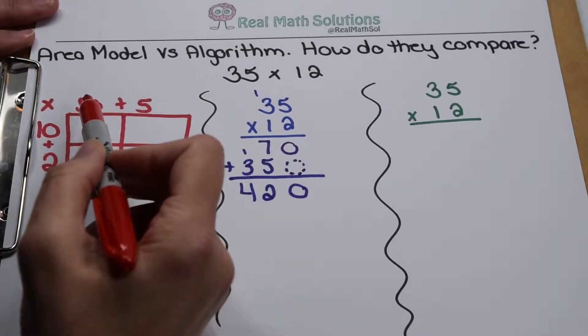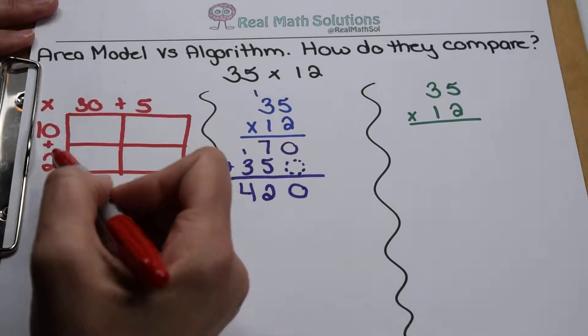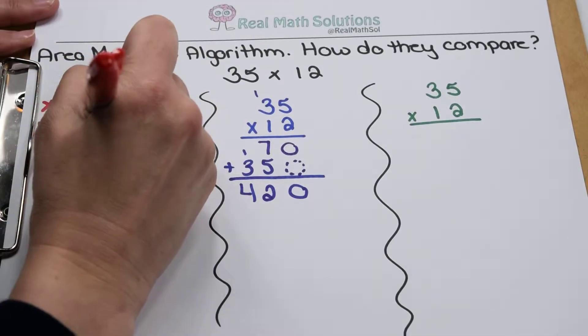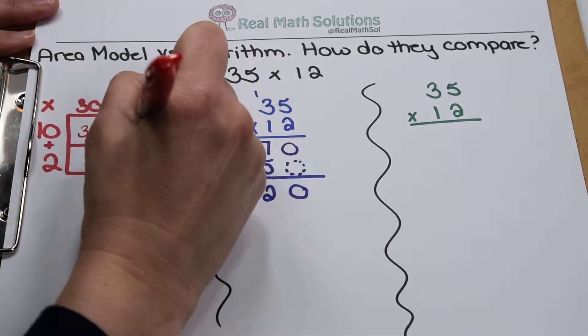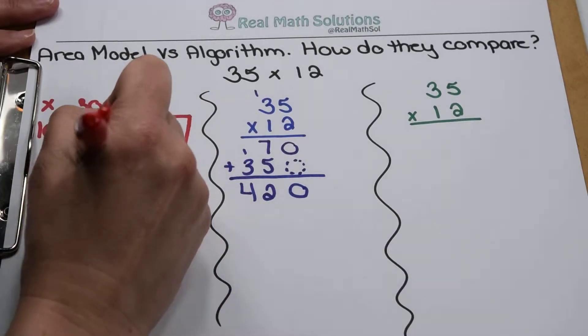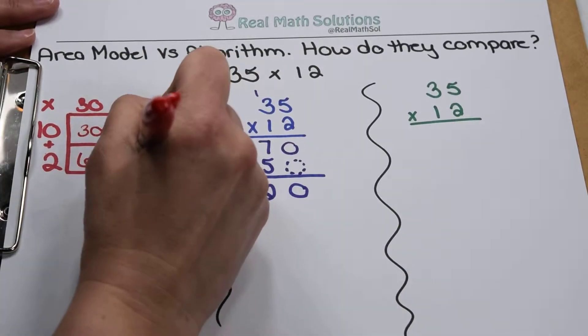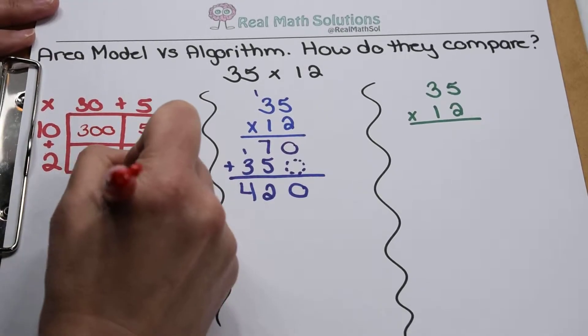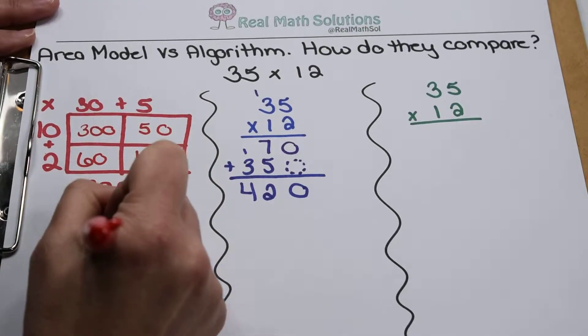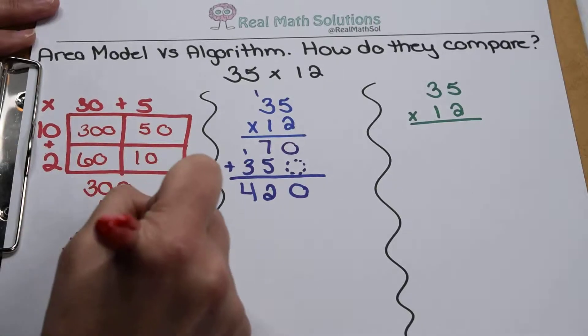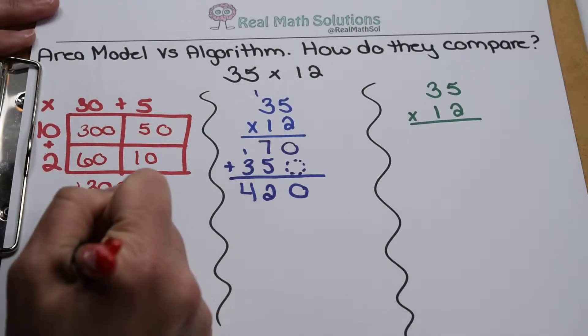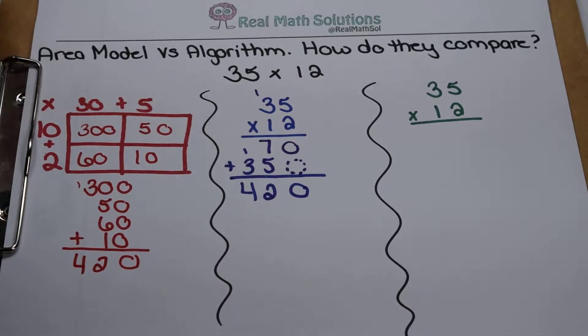But when I set up my area model, I break that down into 30 and 5, 10 and 2. So now I multiply each combination: 30 times 10 gives me 300, 10 times 5 gives me 50, 30 times 2 gives me 60, 5 times 2 gives me 10. Now I add those values together: 300 plus 50 plus 60 plus 10. There's 0's, 5 and 6 is 11 plus 1 is 12, carry my 1, and there's my 420.